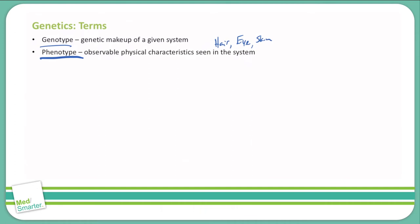Specifically on skin color, your genotype may code for a very dark skin color or a very light skin color, but your exposure to outside environments such as the sun and other factors can change the skin color a little bit with various types of melanin.